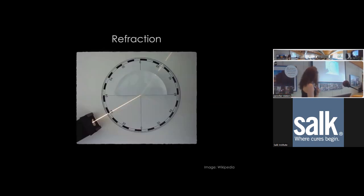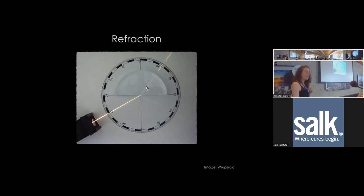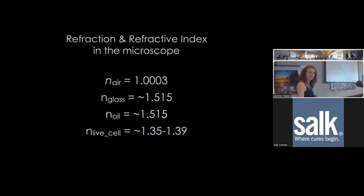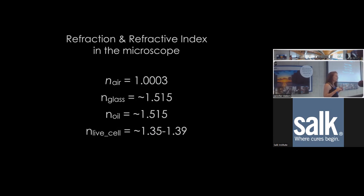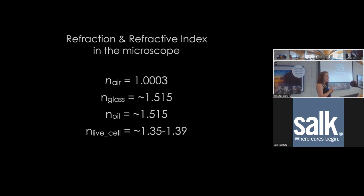Refraction occurs when light passes from one material to another with a different refractive index—the light slows down and changes trajectory. This is occurring throughout your microscope: sometimes beneficially, as when lenses focus light, and sometimes not so great. Refractive index is a measure of how much refraction occurs at a given interface. The materials in your optical path—air, glass, immersion oil, and your cells—all have different refractive indices.